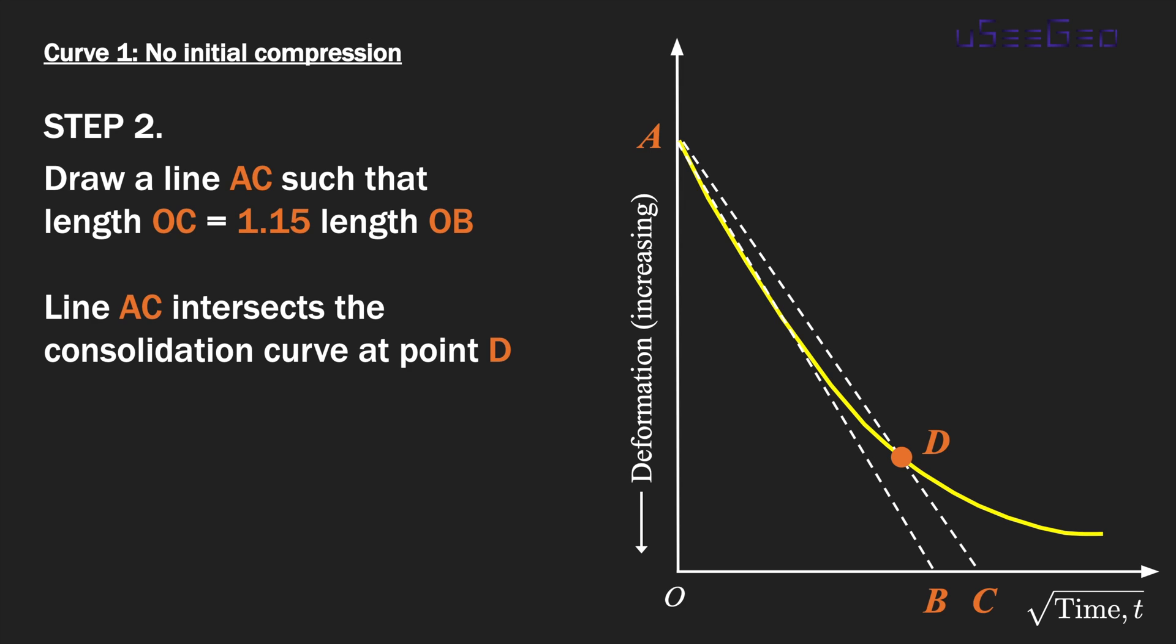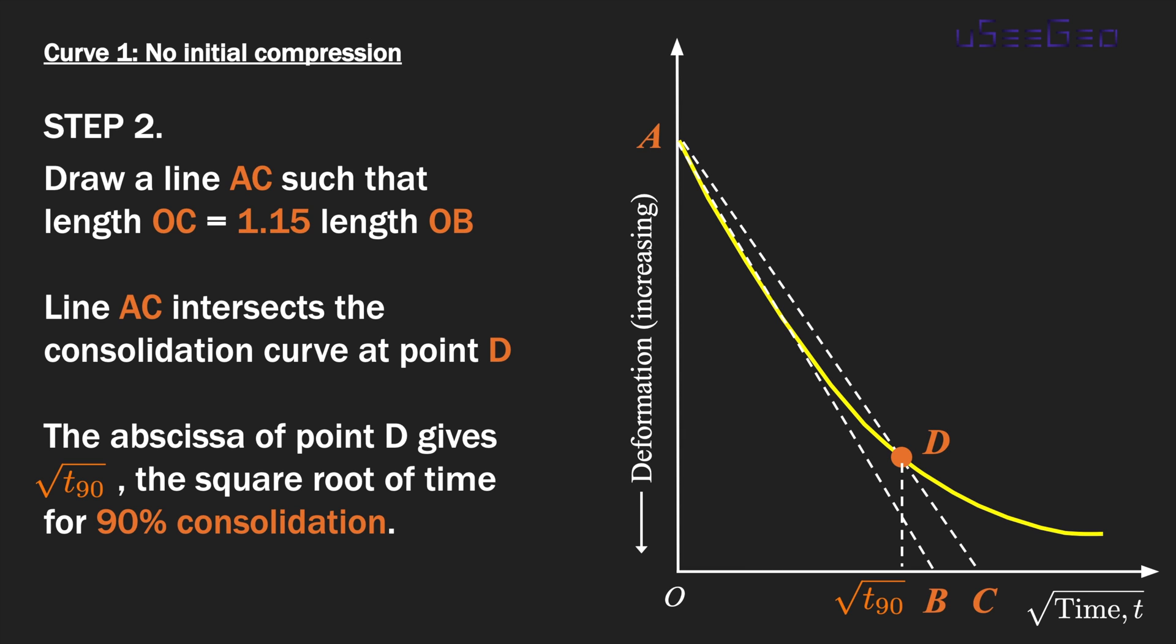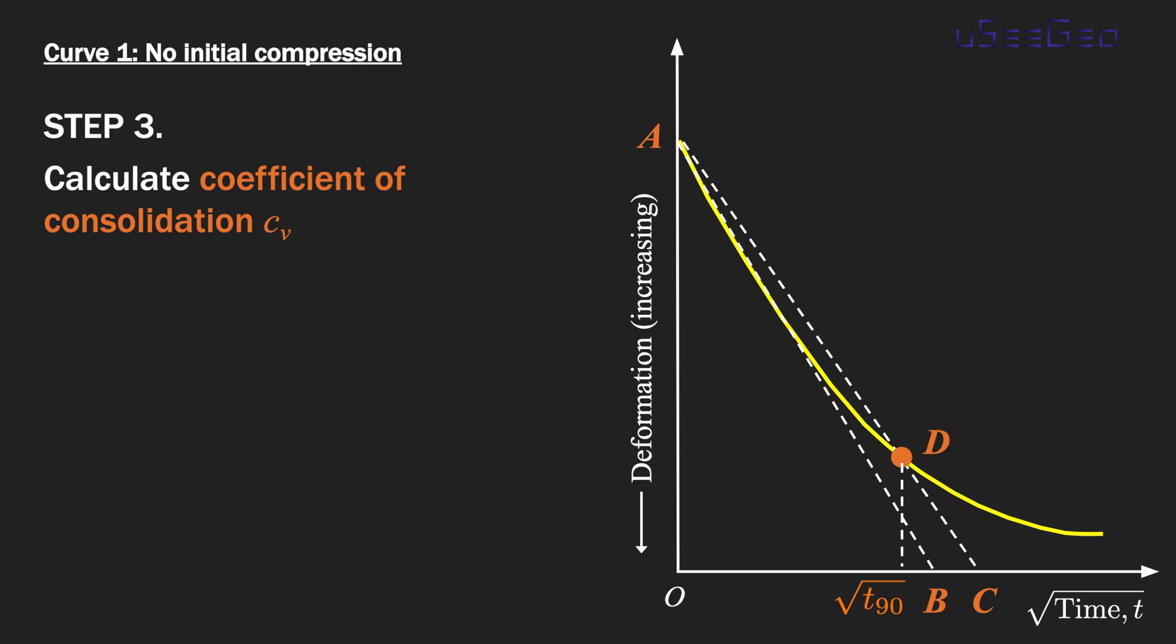The intersection of this line AC with your consolidation curve, we call it point D. The abscissa of point D gives the square root of t₉₀, so basically the square root of time corresponding to 90 percent consolidation. Once you have this square root of t₉₀, step number three is to calculate the coefficient of consolidation c_v.